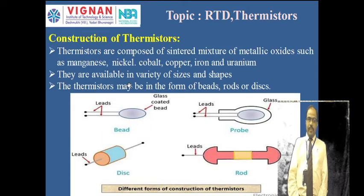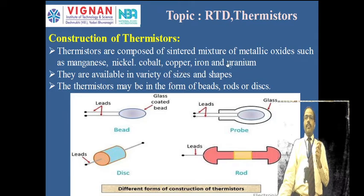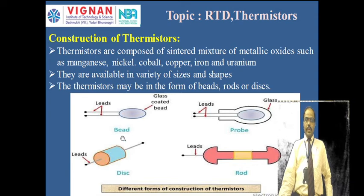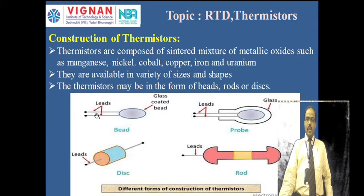Thermistors are composed of a mixture of metallic oxides such as manganese, nickel, cobalt, copper, iron, and uranium — for example manganese oxide and nickel oxide. They are available in a variety of sizes and shapes: beads, rods, probes, and discs. Each bead-type thermistor has two connecting leads. As temperature changes, the resistance of the metallic oxide material changes, which is sensed through the connecting leads.